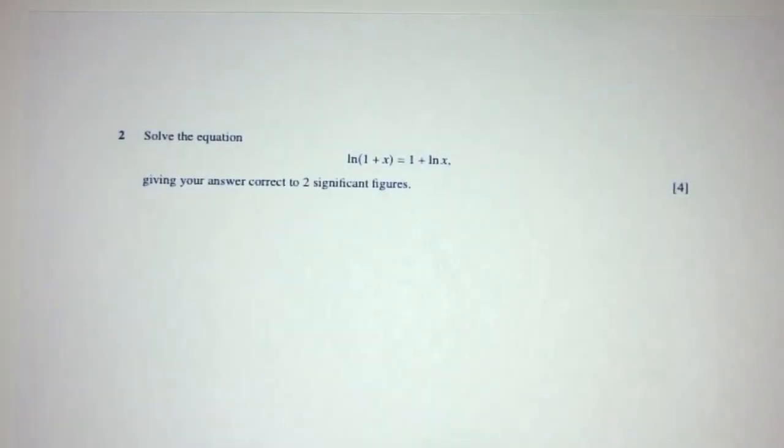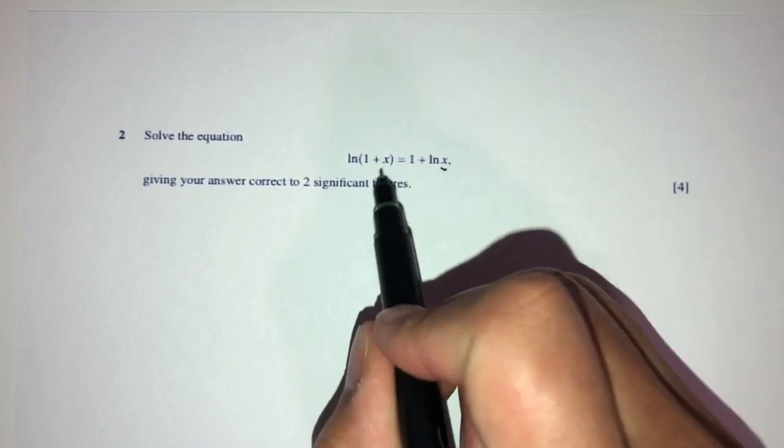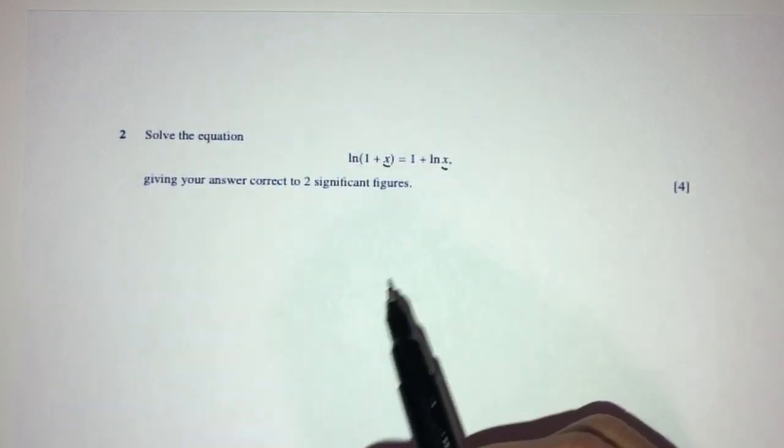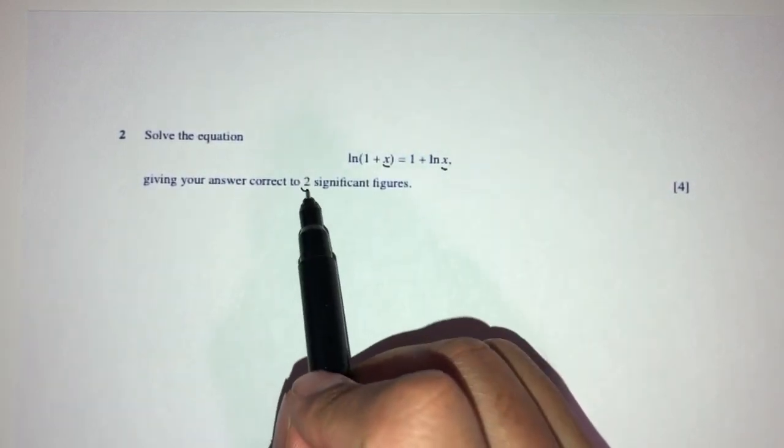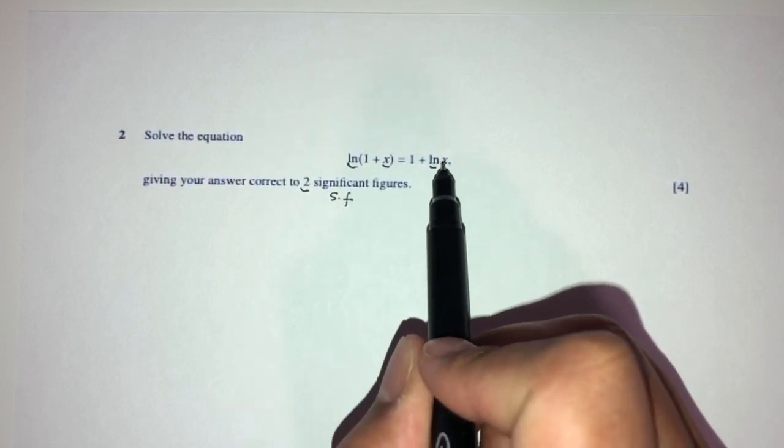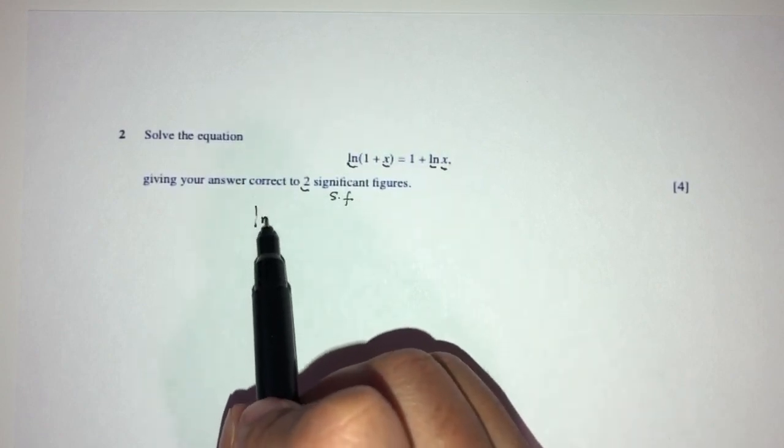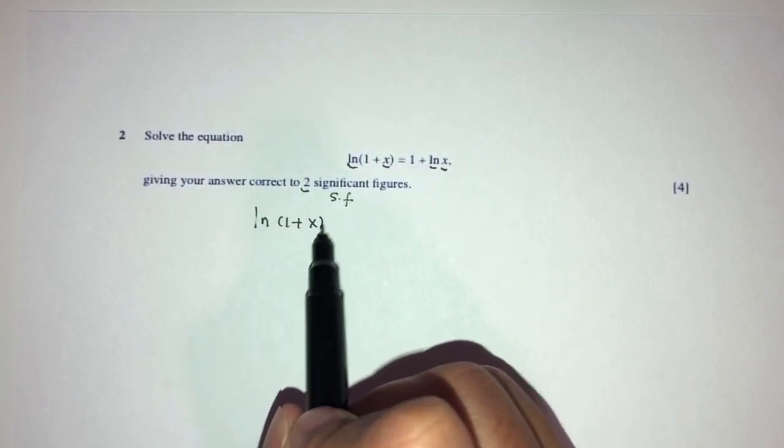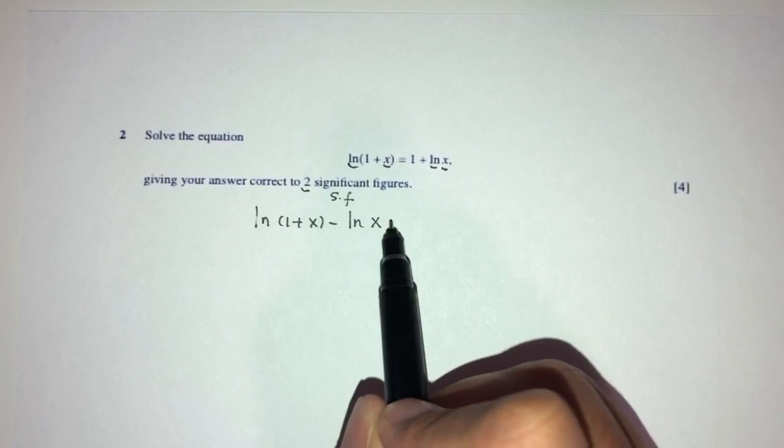Now let's move on to question number 2. Here we have to solve the equation, solving means finding the value of x. So we have to find this value of x. Now when you find the value, provide this to 2 significant figures. Here we have ln, here we have ln. Let's send them to one side. You have ln of 1 plus x minus ln of x is equal to 1.